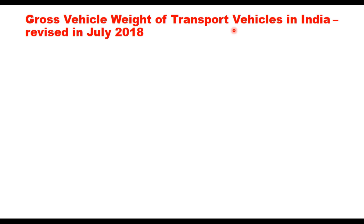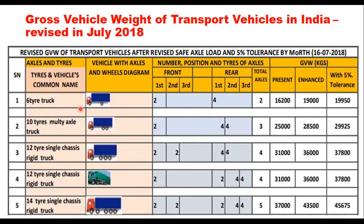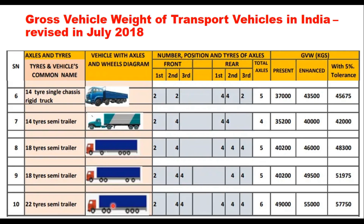Another important characteristic of a vehicle in the design of pavements is gross vehicle weight of transport vehicles. This gross vehicle weight in India has been revised by the Ministry of Road, Transport and Highways in July 2018. For example, for a six-tyre truck, the limit was earlier 16,200 kg and has now been revised to 19,000 kg. For a 10-tyre multi-axle truck with a tandem axle at the rear and single axle at the front, it has been raised from 25,000 kg to 28,500 kg. For a 14-tyre single-chassis rigid truck unit, it has gone up from 37,000 to 43,500 kg.